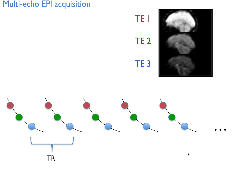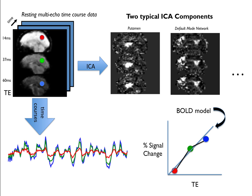In practice it looks something like this. These are the images and these are the time series, color-coded red, green, and blue — echo time one, two, and three — separated by the TR. We can do this very efficiently with multi-echo EPI. We concatenate the three images into one, make a time series, and compute ICA components. We then look at whether those components show an echo time dependence.